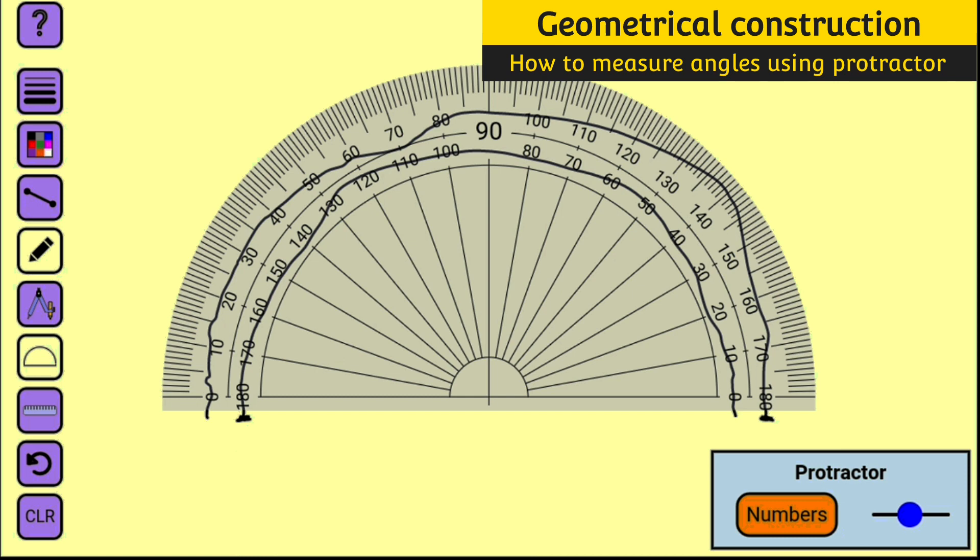Just that if you are measuring an angle that is subtended towards the left hand side, you have to count it anti-clockwise. This means you have to use the interior angles. And if it is subtended towards the right hand side, you have to count it in this direction.